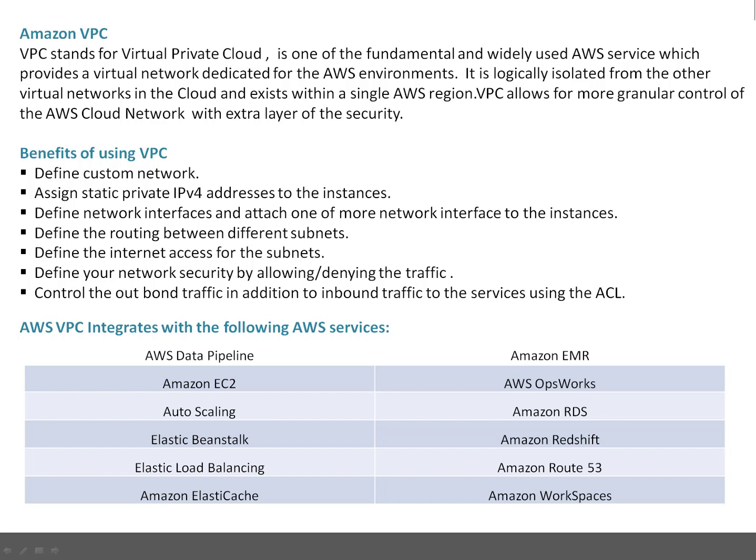VPC is logically isolated from the other virtual networks in the cloud and exists only within a single AWS region. So if you have one VPC in one region, it cannot span into another region — VPC is dedicated to a region. VPC allows for more granular control of the AWS cloud network with an extra layer of security, meaning you will have more control when you administer a VPC.